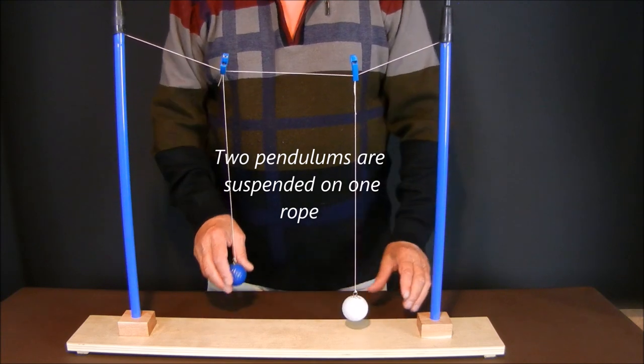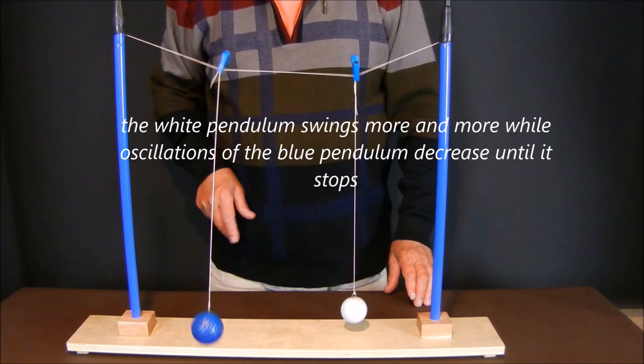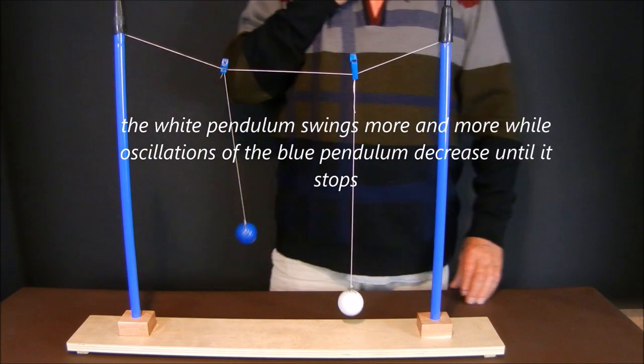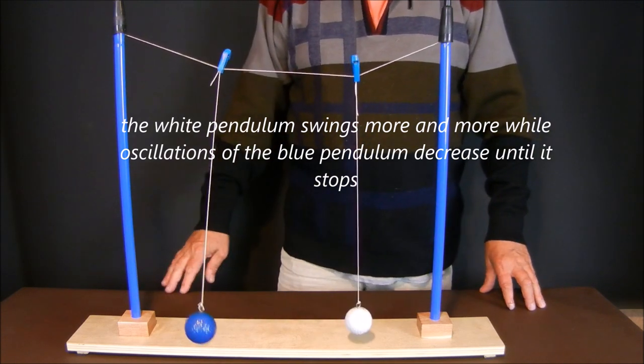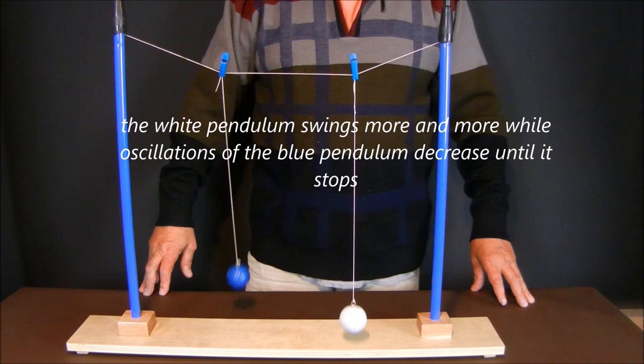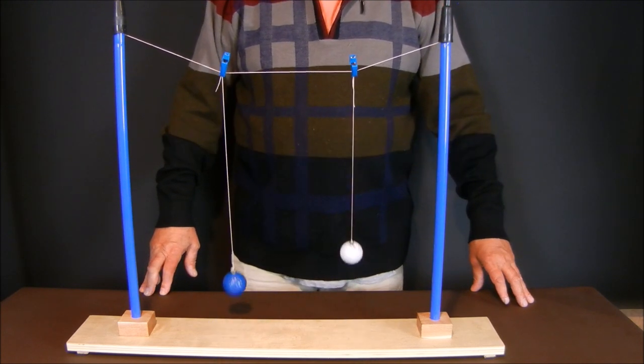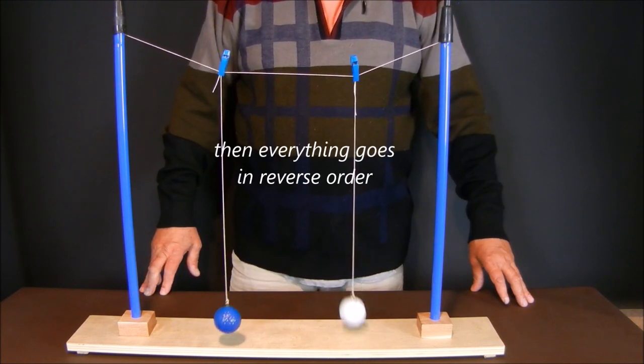Two pendulums are suspended on one rope. The white pendulum swings more and more, while oscillations of the blue pendulum decrease until it stops. Then everything goes in reverse order.